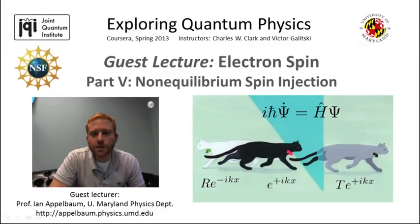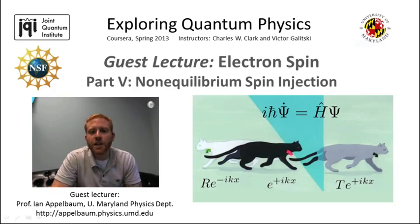This is the last part of my guest lectures on electron spin, in which I'll focus on normally non-magnetic systems which are pushed out of spin-degenerate equilibrium by spin injection from an external ferromagnetic source.